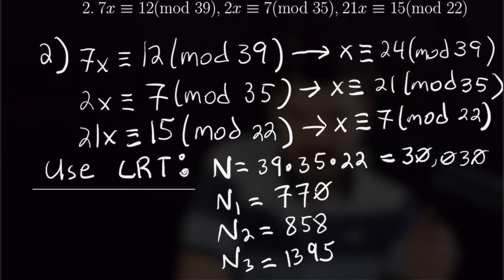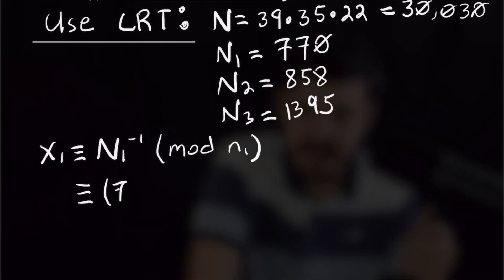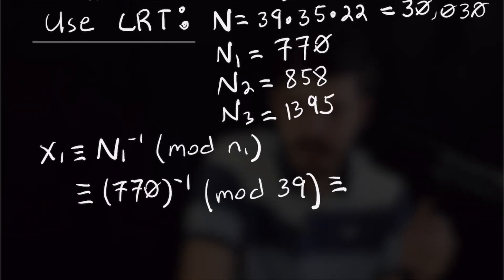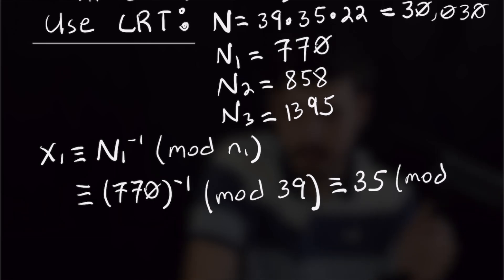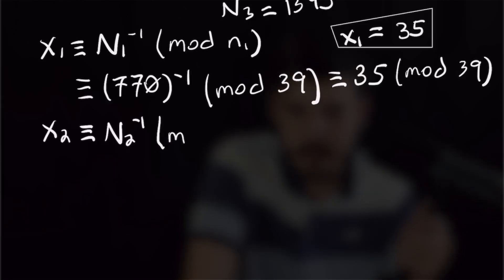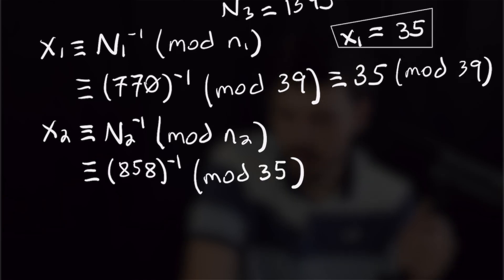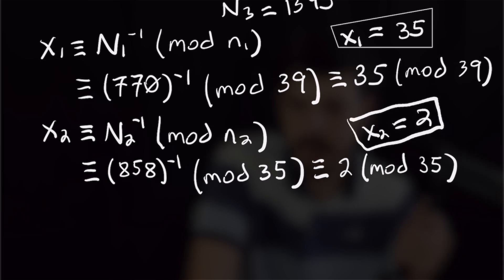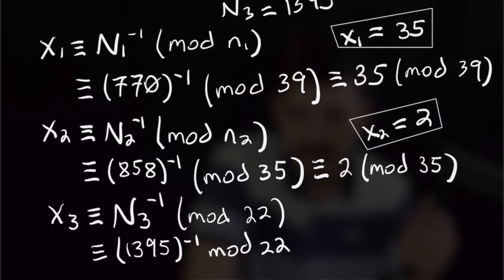Then we're going to use these to calculate our x sub one, x sub two and x sub three. So plugging those into the equation x sub one is equal to big n sub one inverse mod little n sub one, we will need to calculate 770 inverse mod 39, and that is going to be 35. For x sub two, we will need to calculate 858 inverse mod 35, which is congruent to 2. And lastly, for x sub three, we will have 1395 inverse mod 22, which will give us x of three is equal to 5.